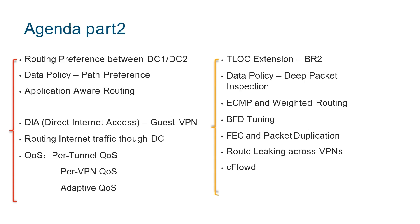In the second part, through policies or templates, we manipulate our entire traffic. The first is dual DC, which can achieve traffic optimization. We prefer the primary DC while also creating backups. Data policy directs specific traffic to access specific DCs, thereby distributing the traffic load. Application-aware routing (AAR) is an important SD-WAN feature — our controller monitors the line's real-time load, jitter, and packet loss to dynamically schedule different applications' bandwidth requirements.